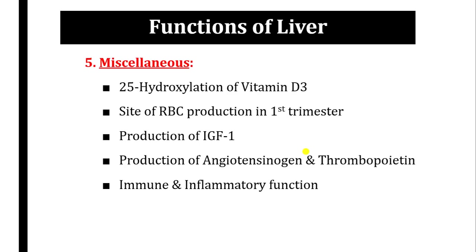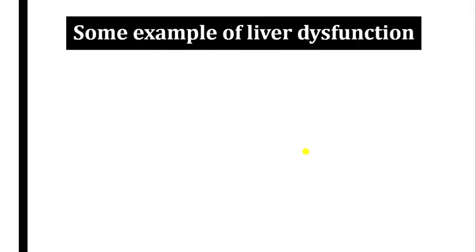Miscellaneous functions of the liver include 25-hydroxylation of cholecalciferol — one step in forming the active vitamin D, calcitriol. The liver is the site of RBC production (erythropoiesis) in the first trimester. It produces IGF-1 (insulin-like growth factor 1), angiotensinogen, and thrombopoietin — regulating blood pressure and platelet synthesis respectively — and also carries out immune and inflammatory functions.